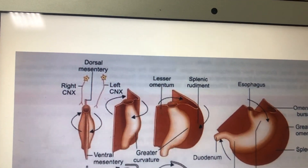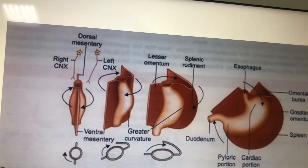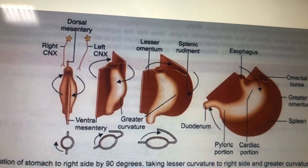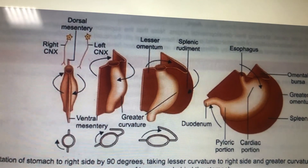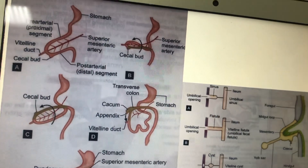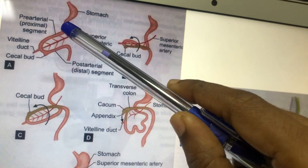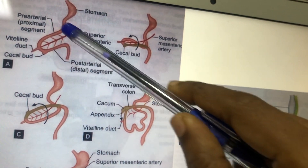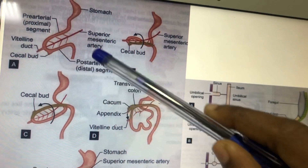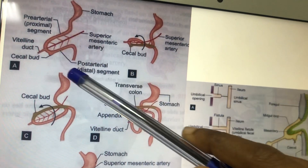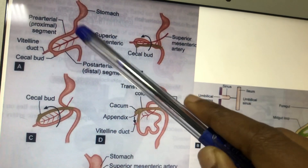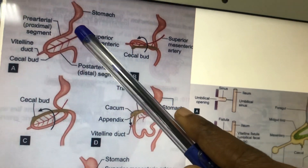Next we look at midgut development. First, the foregut derivatives: esophagus lower end, stomach, liver bud, gallbladder, and lung bud — everything is derived from the foregut. For the midgut: at the sixth week of intrauterine life, the midgut cannot accommodate the entire intestinal loop inside the abdominal cavity.